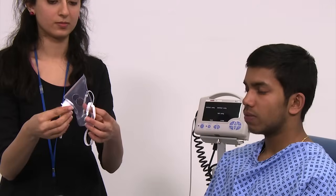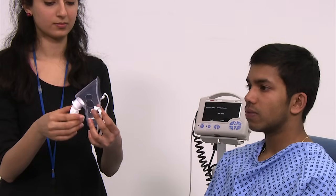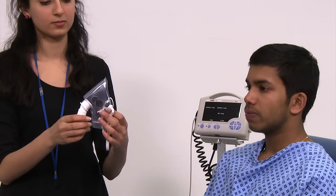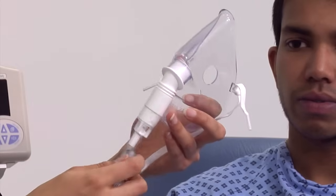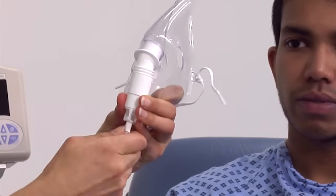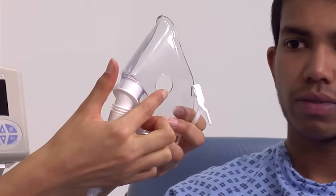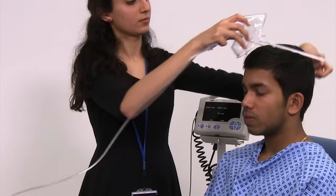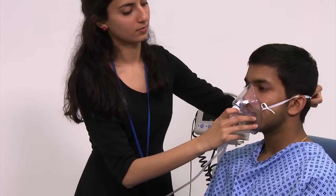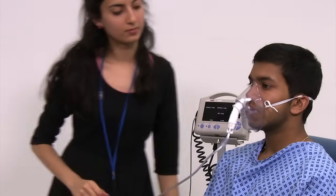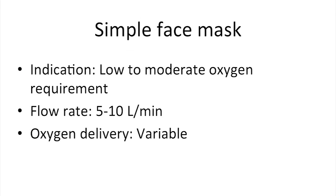An alternative to nasal cannulae is to use a simple face mask. This is less comfortable for the patient, but can deliver slightly higher concentrations of oxygen. The oxygen tubing is connected to the plastic port at the bottom of the mask. The open side ports allow air to mix and dilute the oxygen, as well as allowing carbon dioxide to leave. The mask can then be moulded to fit over the patient's nose and mouth and is secured by an elastic band at the back. The flow rate should be adjusted to between 5 and 10 litres per minute. However, it is difficult to know exactly how much oxygen is being delivered through a simple face mask.